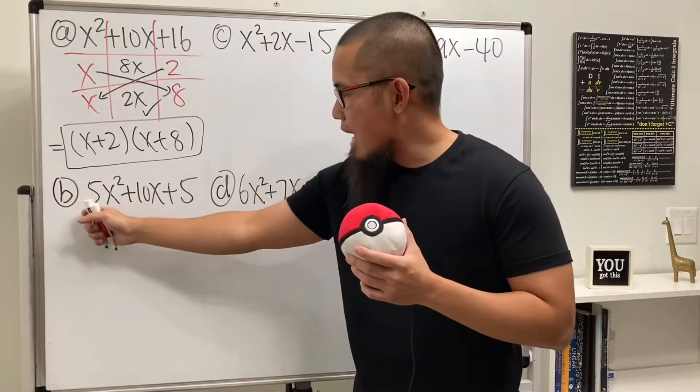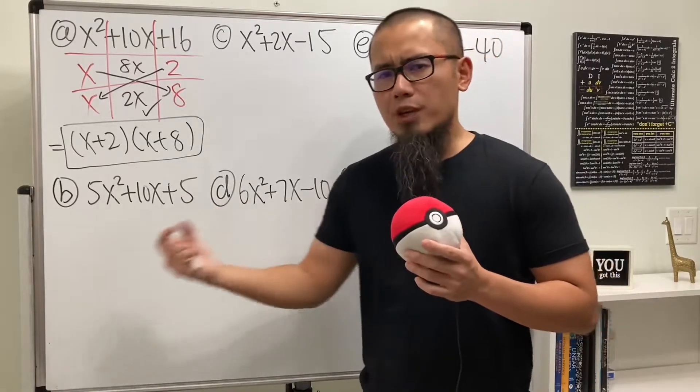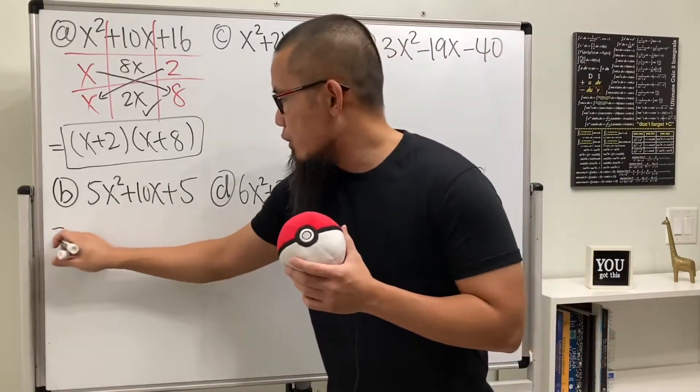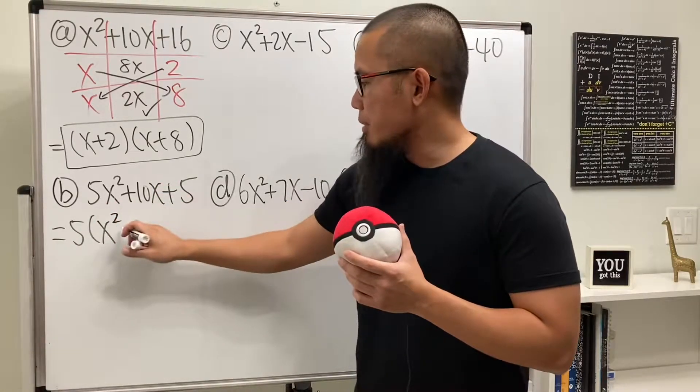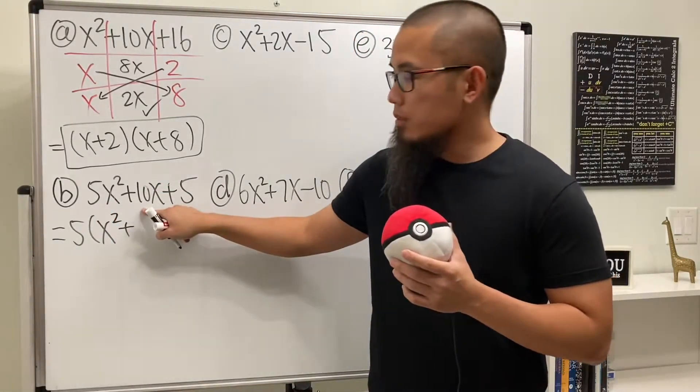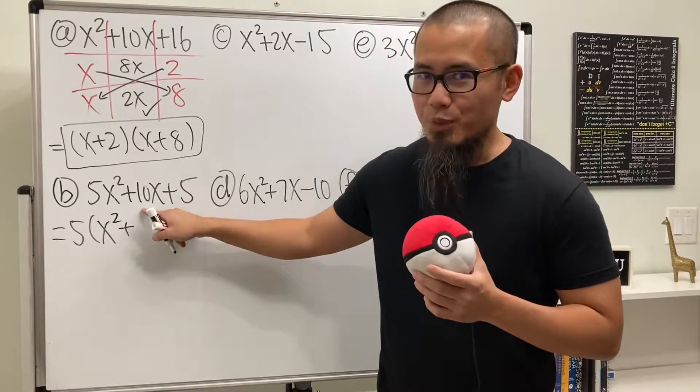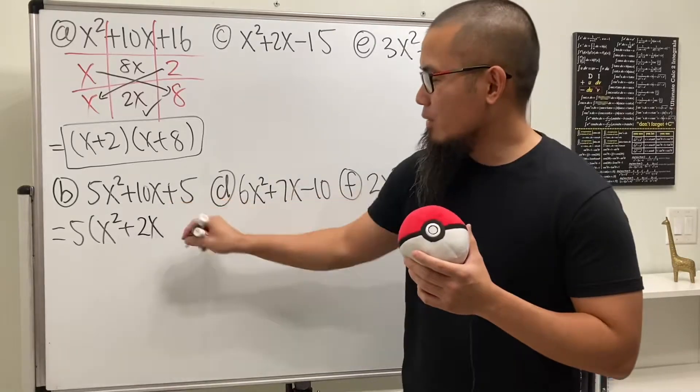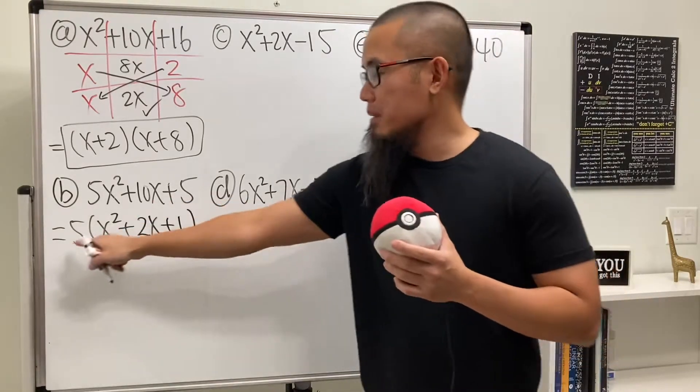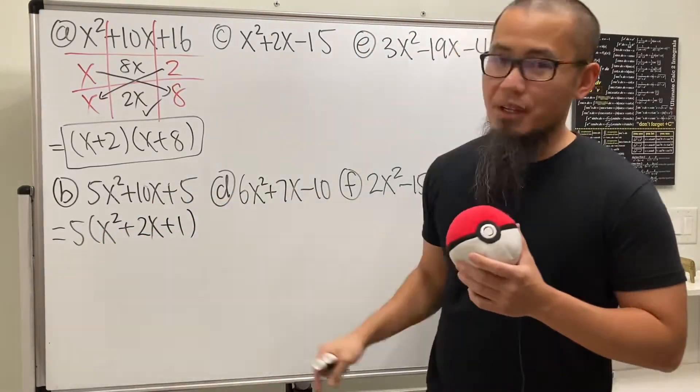Next one. We have noticed that we have 5, 10, and 5. So we can factor out 5 first. Let's go ahead and do that before we do the tic-tac-toe. We will get 5 times x squared, and then plus, this is 2. I mean, originally it was 10, divided by 5 we will get 2. And then we will have the plus 1. 5 divided by 5 is 1.